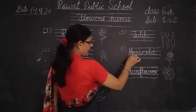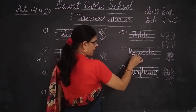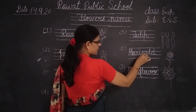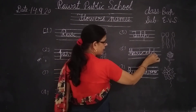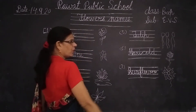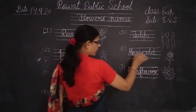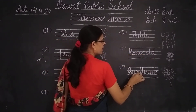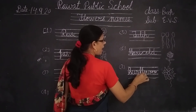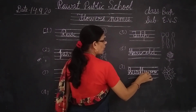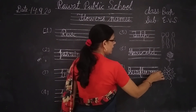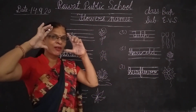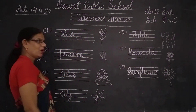T-U-L-I-P. Tulip. Now next is M-A-R-I. Mary. C-O-L-D. Gold. Marigold. Marigold. Now next is S-U-N. Sun. F-L-O-W-E-R. Sunflower. Sunflower.